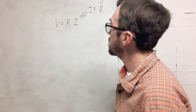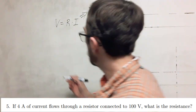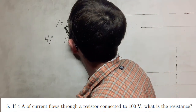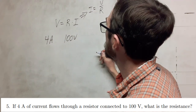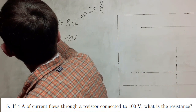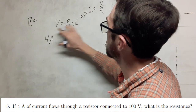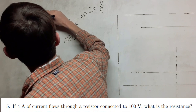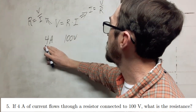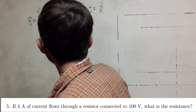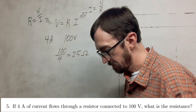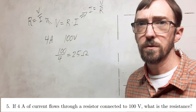Ohm's law is really useful and we're going to use it again. I have 4 amps of current flowing through a resistor and a 100 volt source, and we need to know what the resistance is. Rearranging Ohm's law: R equals V divided by I. So we take 100 divided by 4, which gives us 25 ohms.